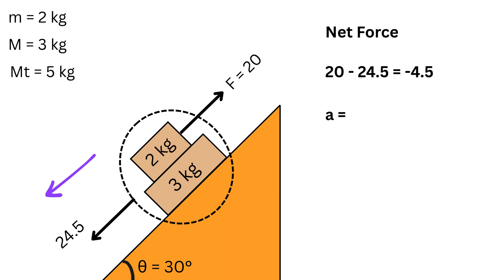To find the common acceleration A, we divide this net force by the total mass of 5 kg. We get minus 0.9 meters per second squared. This negative value simply means the whole system would be accelerating down the incline if they do not slip and they move together.